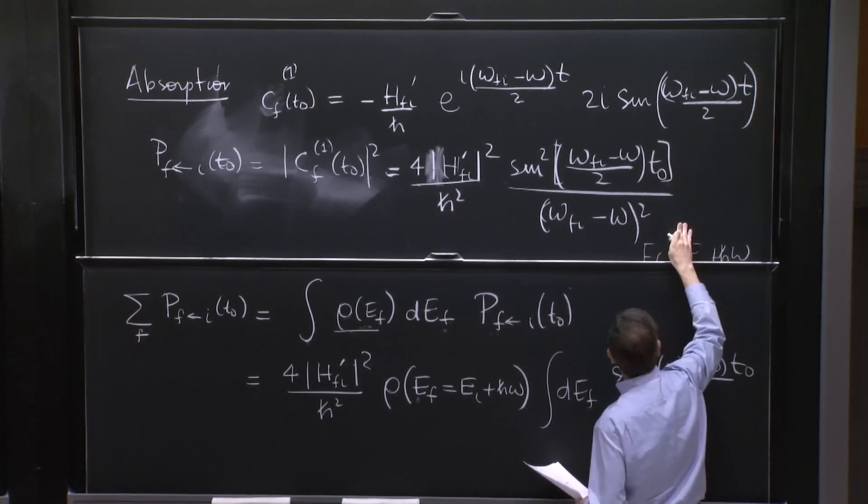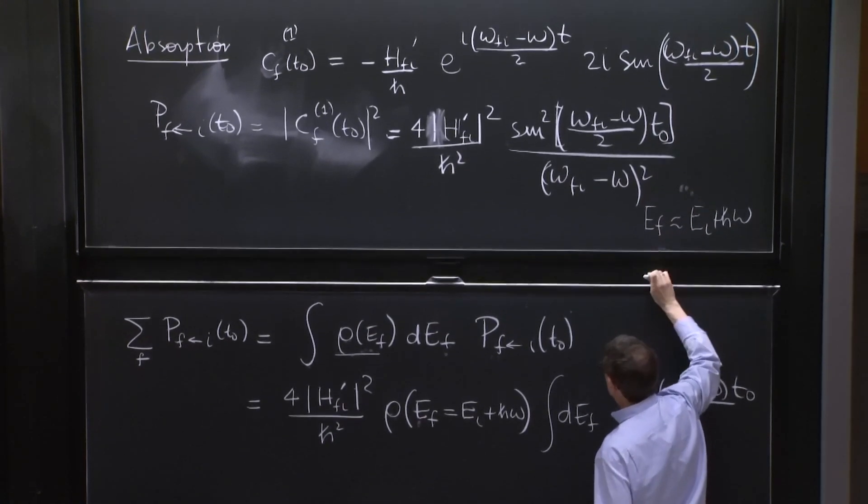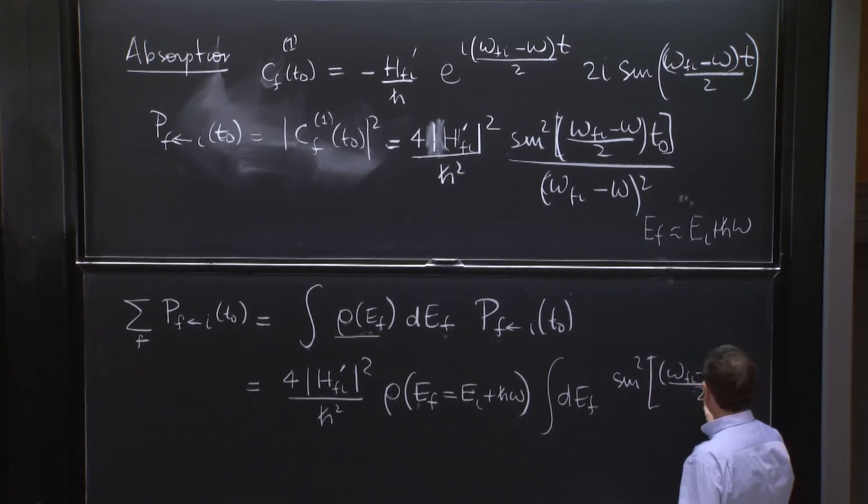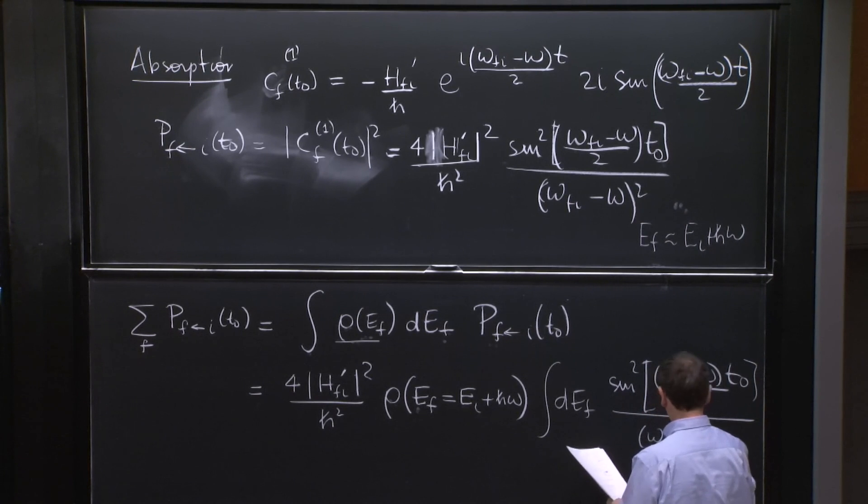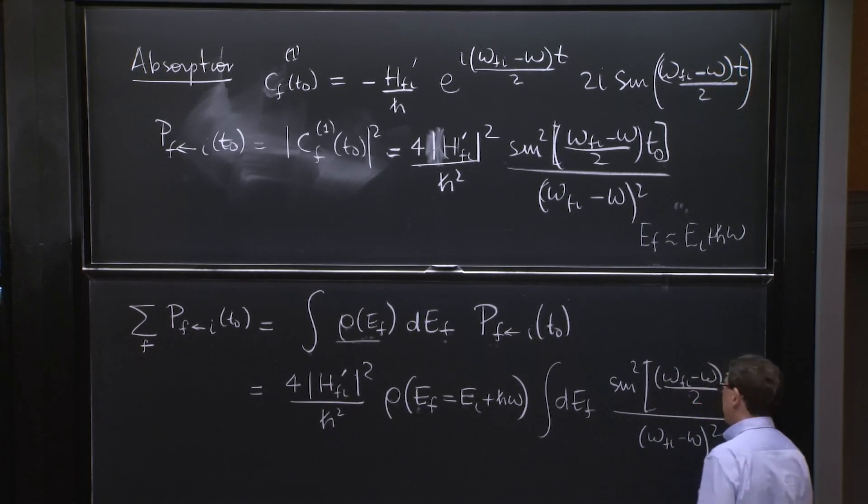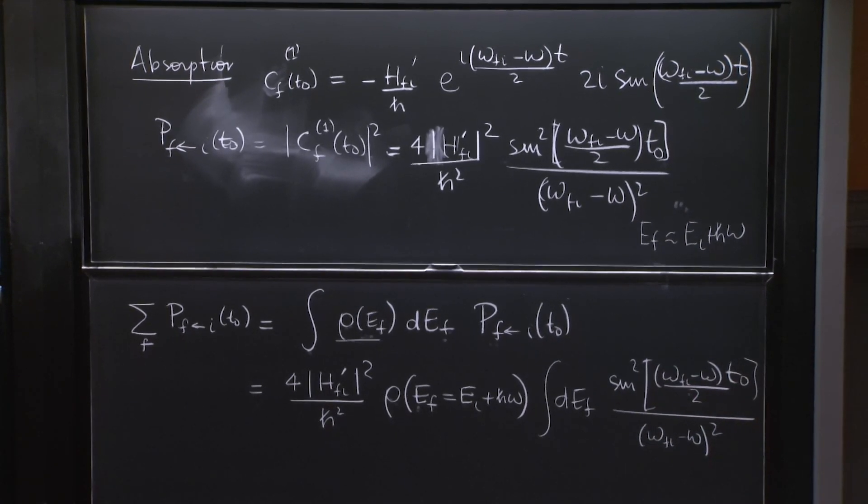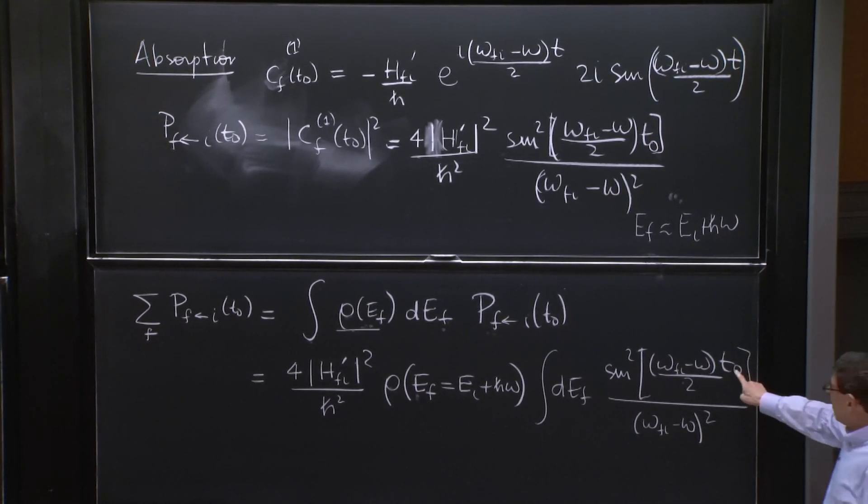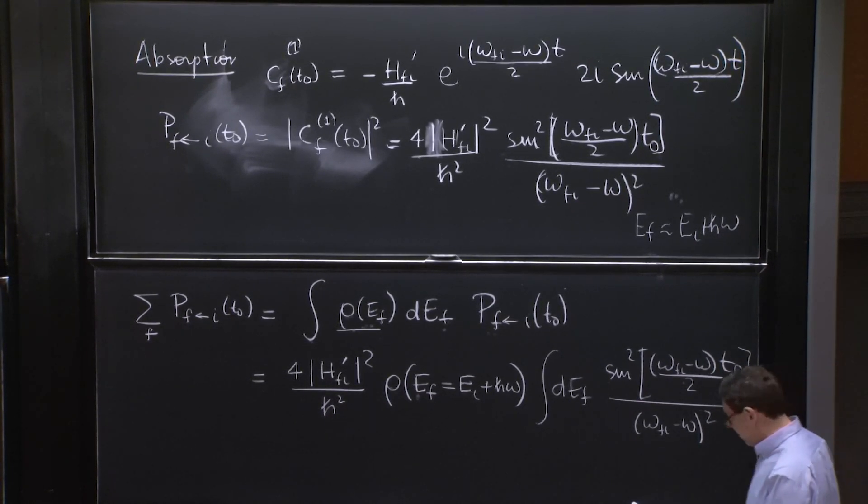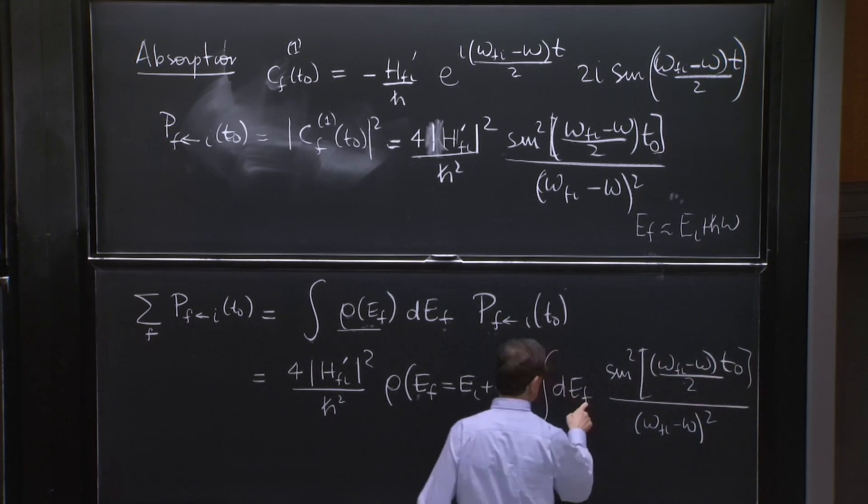But I didn't copy it. T naught and t naught's up there. Over 2 over omega fi minus omega squared. And this is the story of the lobes.